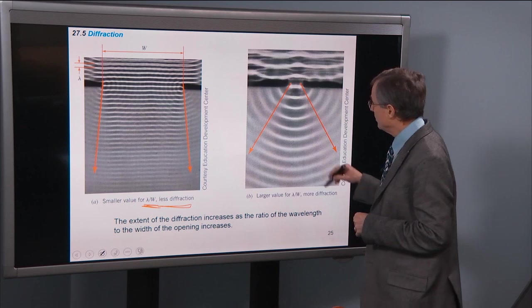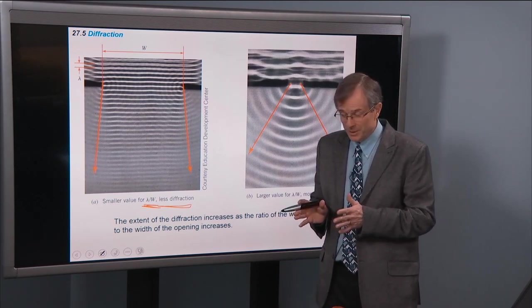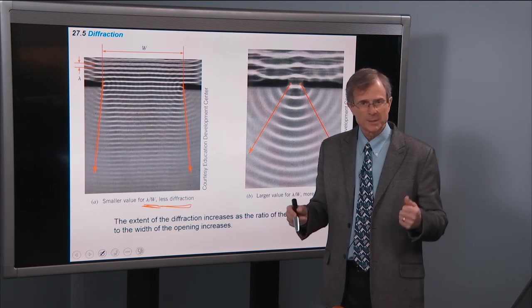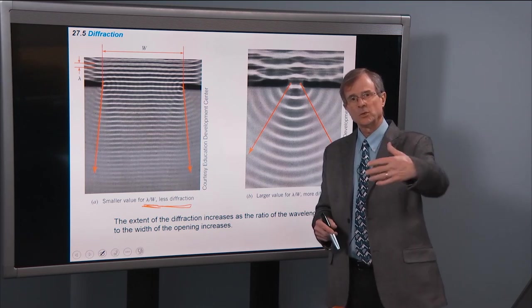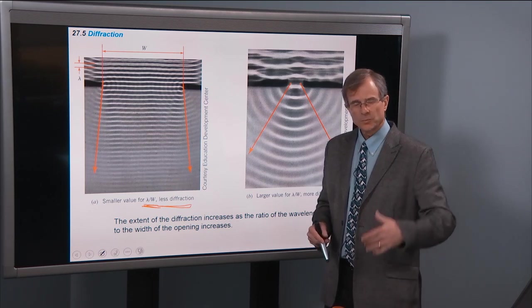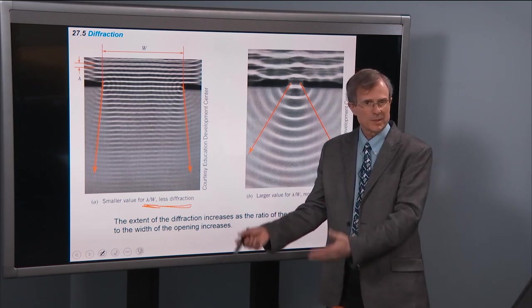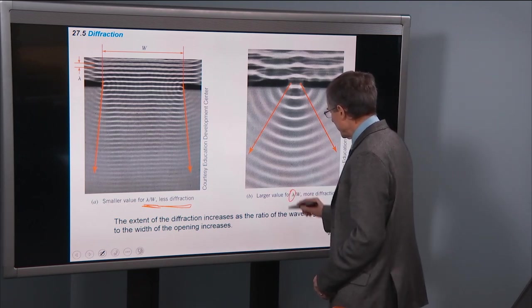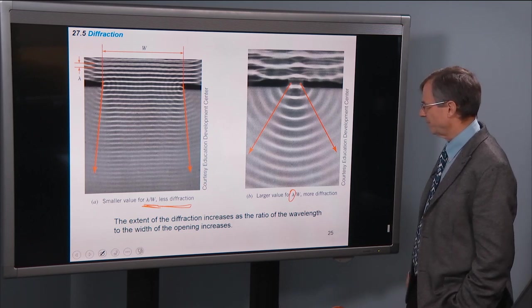You might remember the case where we're talking about the band that was coming along the street. And what instrument do you hear first? Is it the piccolo or the bass drum? And the answer is the bass drum. It has a long wavelength, and its wavelength becomes perhaps comparable to the sizes of the obstacles, and it bends around those corners a lot better. So this is a larger value for the wavelength divided by the width and more diffraction.